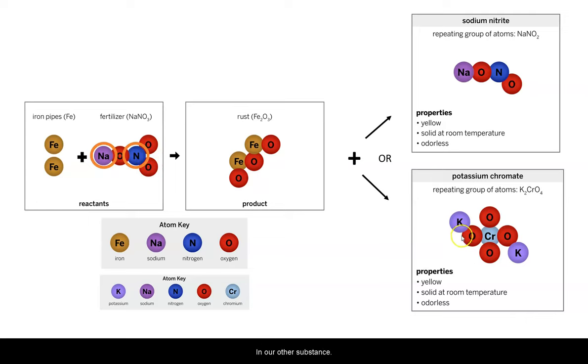In our other substance, there are potassium and chromium atoms, which we do not see anywhere in the reactants. This is telling me that there is no way that the potassium chromate could be the other substance. This would mean that these atoms appeared out of nowhere.